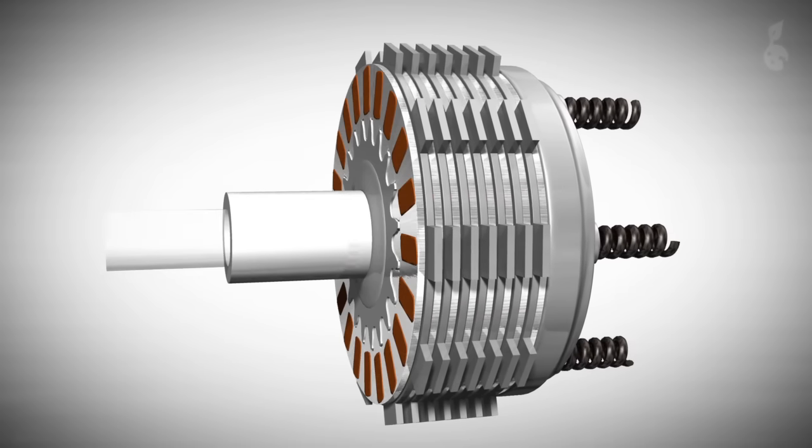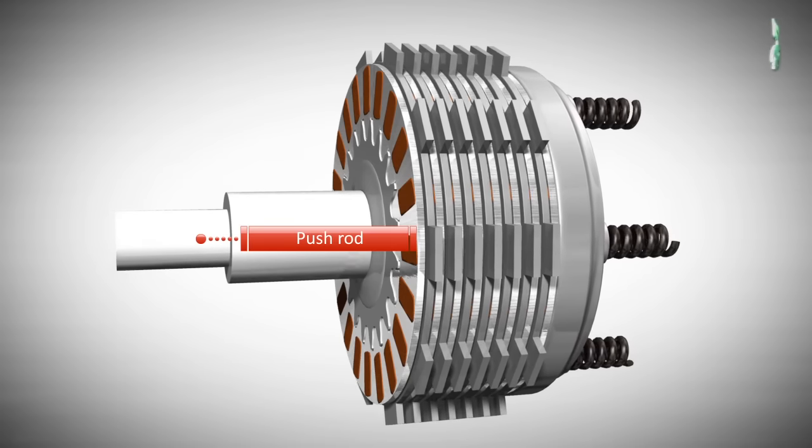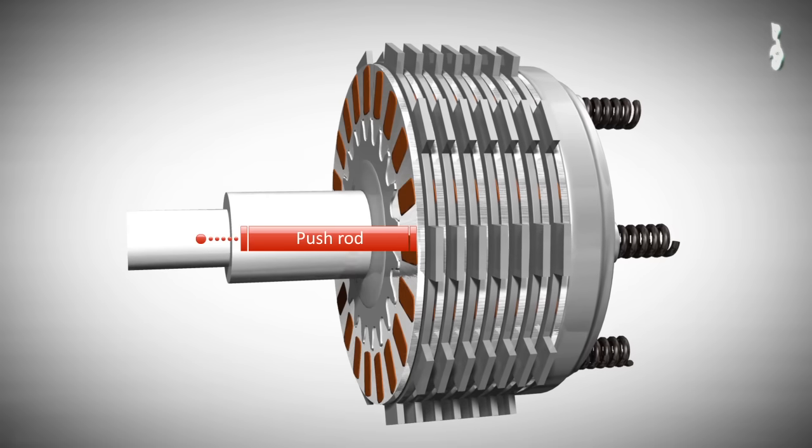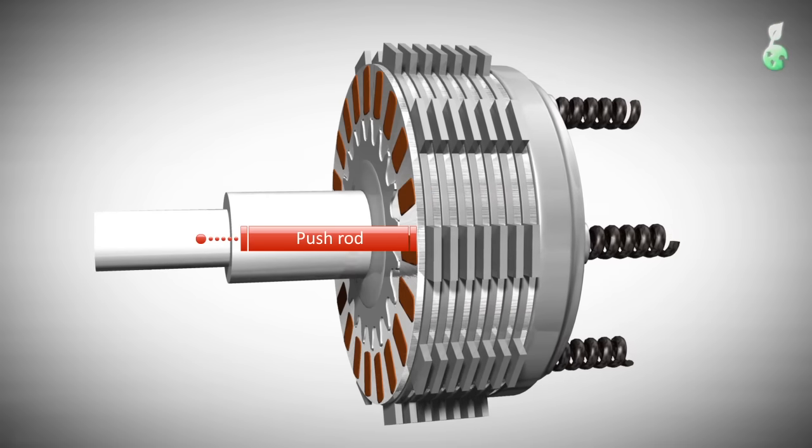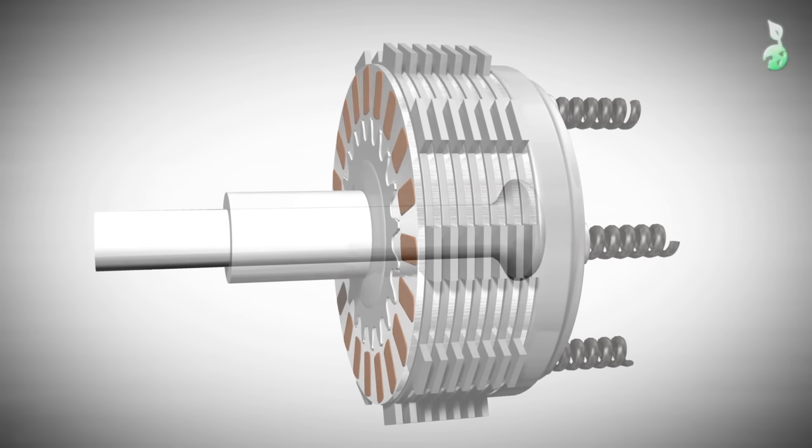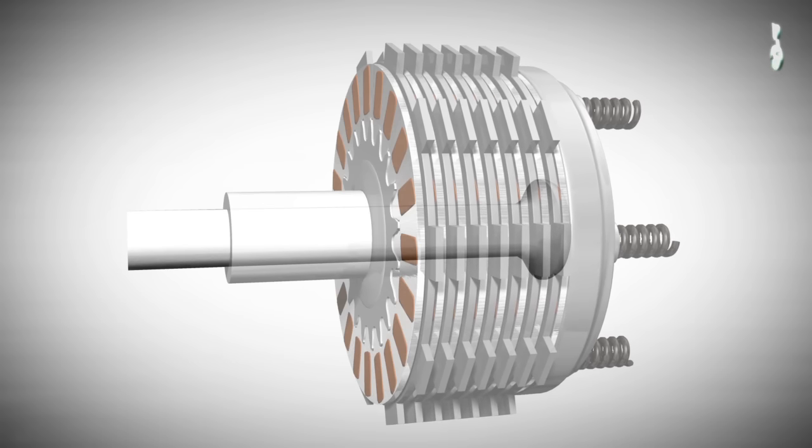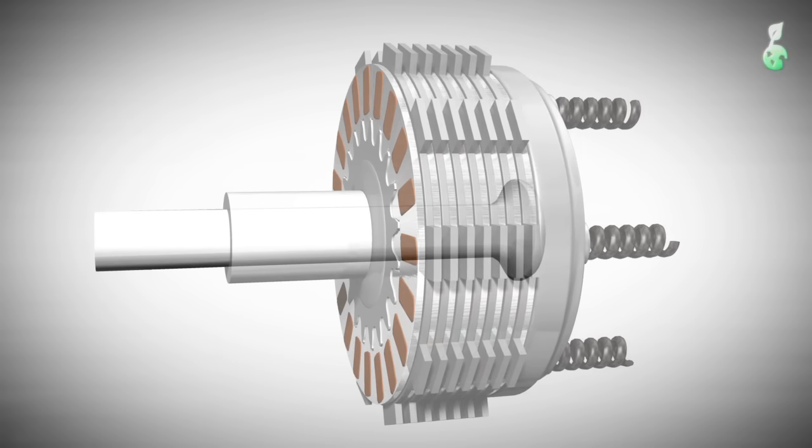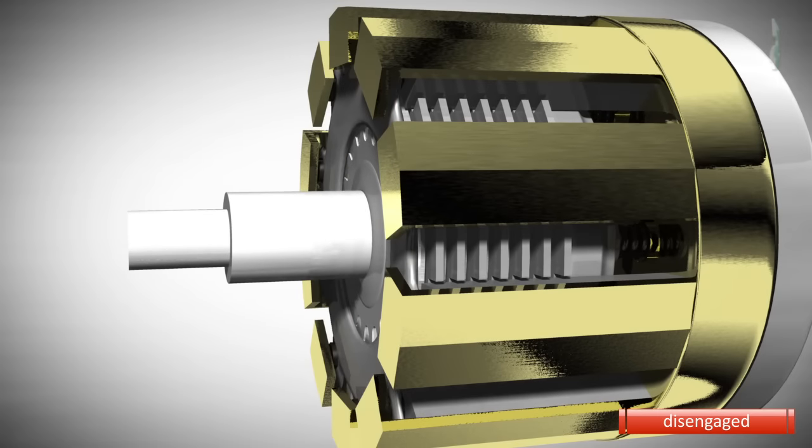Applying pressure to the pressure plate and the coil springs from the other side will release the pressure on the clutch pack. This is usually done by a push rod. This push rod may be connected to a clutch lever that the rider of a motorcycle can use to disconnect the transmission from the engine.